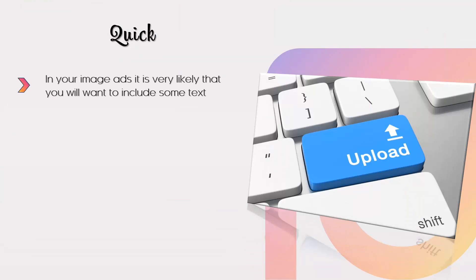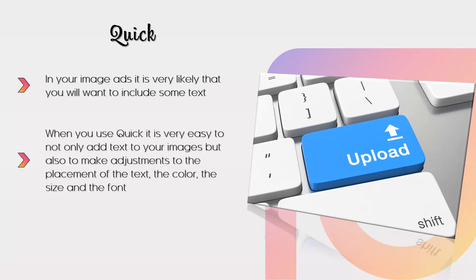Quick. In your image ads, it is very likely that you will want to include some text. This text will be used to persuade the Instagram user to click through your ad. If you are not adept at image editing, then you can do this quickly and easily by using a great little app called Quick. With Quick, it is very easy to not only add text to your images, but also to make adjustments to the placement of the text, the color, the size, and the font. There is a free version of the Quick app that will provide you with the capability to do most image edits, and if you want more features, you can purchase these within the app.